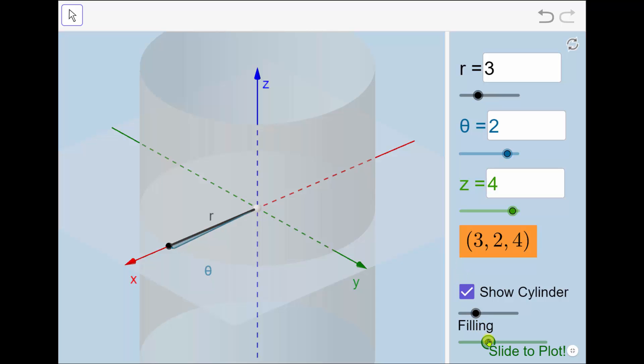Here we see the rotation given by theta. Because theta is two, we know that means two radians.